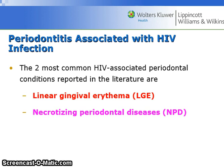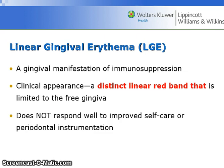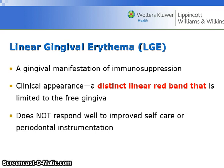The two most common HIV-associated conditions are linear gingival erythema, or LGE, and necrotizing periodontal diseases, NPD. LGE is a gingival manifestation of the immunosuppression accompanied with HIV. The clinical appearance is a distinct, linear, red band that is limited to the free gingiva. It does not respond well to improved self-care or periodontal instrumentation.